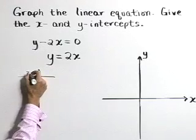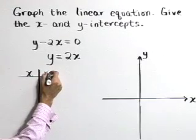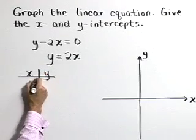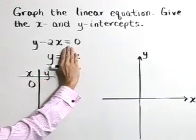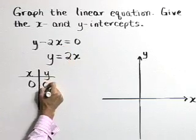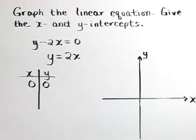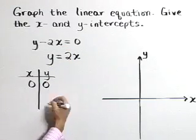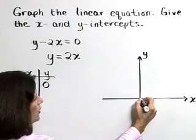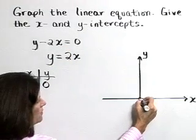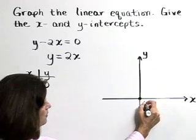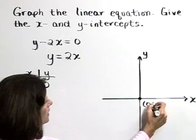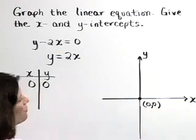In this equation, if we let x equal zero, this term disappears and we also have y is equal to zero. So this graph goes through the origin. Both its x and y intercepts are at the point zero, zero.